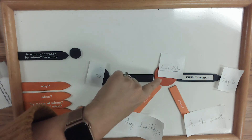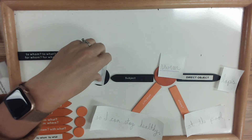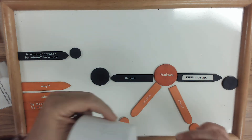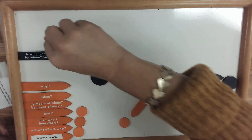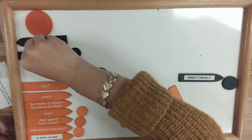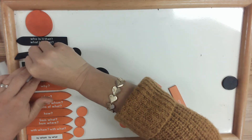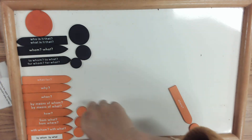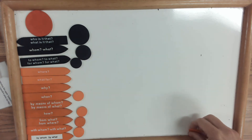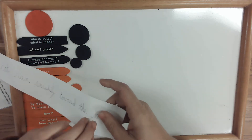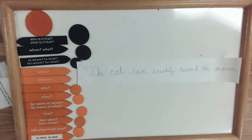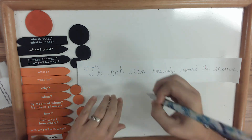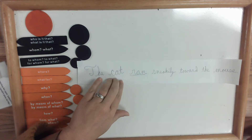Let's try another sentence. Reset your board, clear everything off, put it back in the correct order: predicate, then subject, then direct object. The order of your orange arrows does not matter — they can go any way you like. Here's the sentence: the cat ran sneakily toward the mouse. Just like always, I look at my main verb and that is the word 'ran,' and I cut it out.